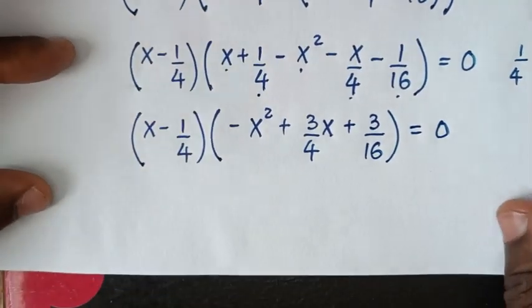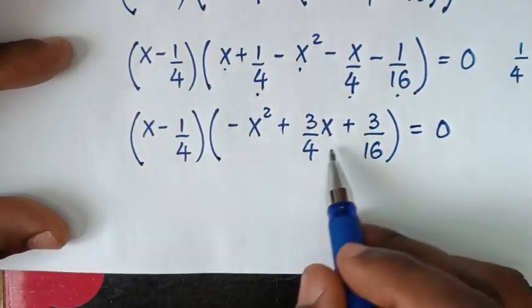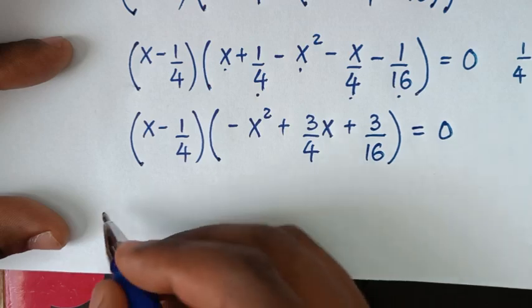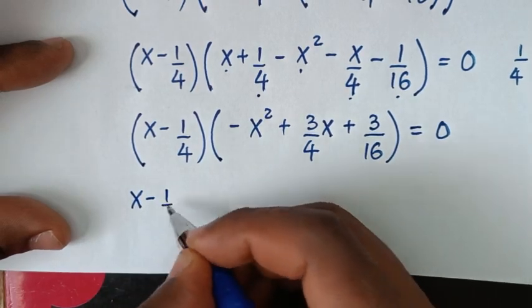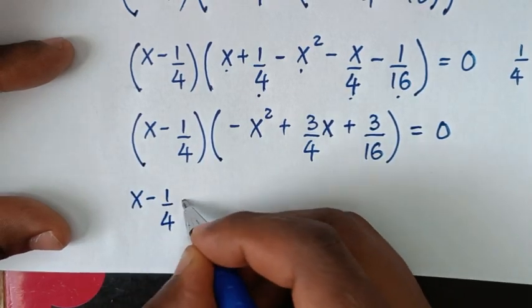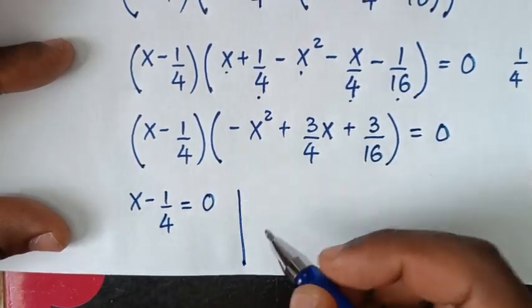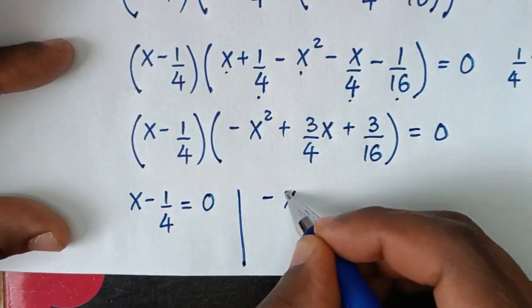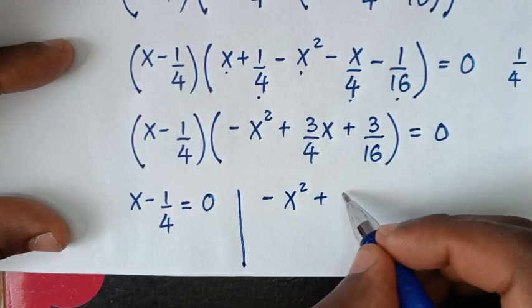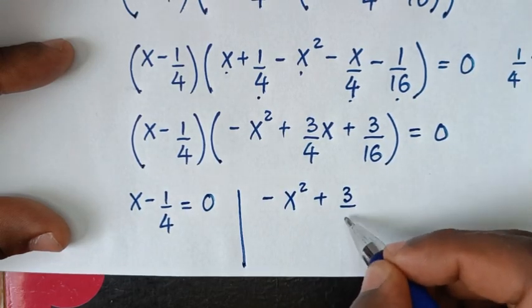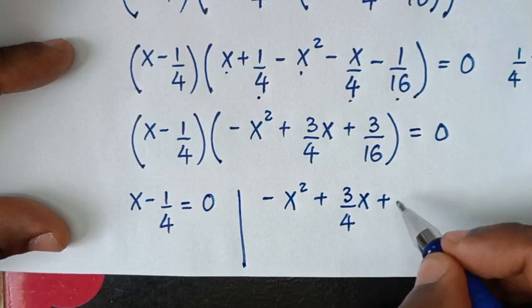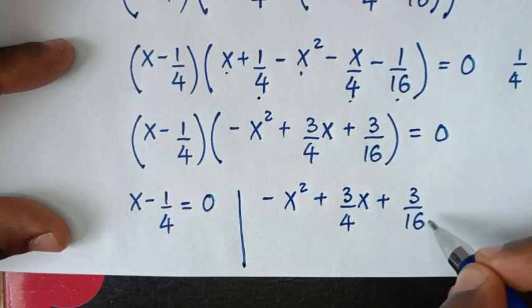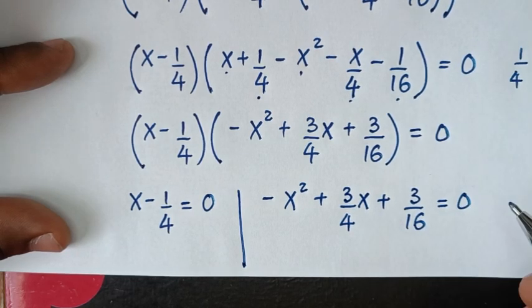Then in the next step, from here we have two solutions: the first solution is x minus 1/4 equals 0, and the second solution is negative x squared plus 3x over 4 plus 3 over 16 equals 0.